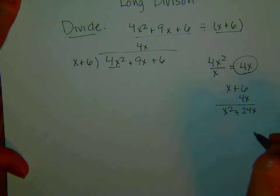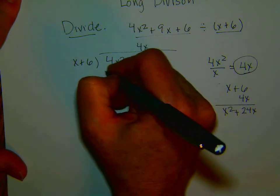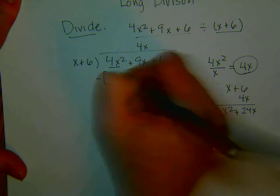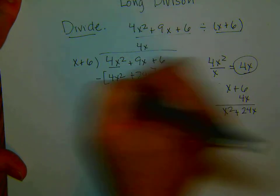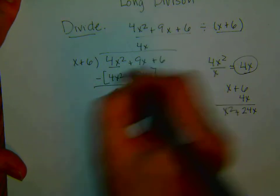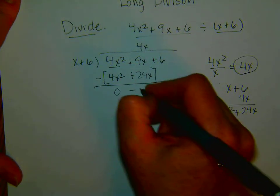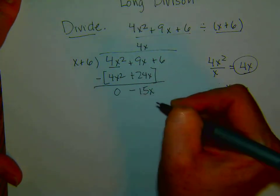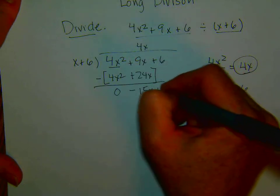Now, remembering the steps of multiplication, divide, multiply, now we're going to subtract minus 4x squared plus 24x. 4x squared minus 4x squared is 0, 9x minus 24x is negative 15x. Bring down the 6.